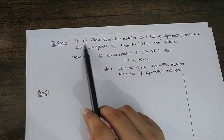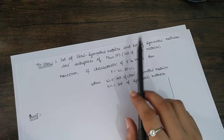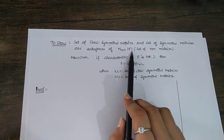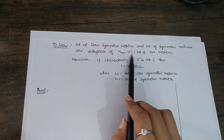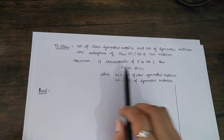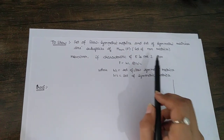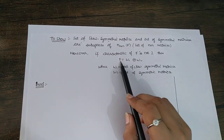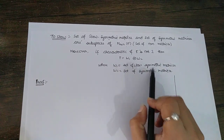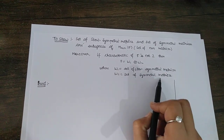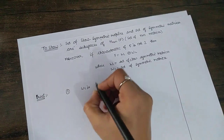We will be proving that the set of skew-symmetric matrices (W1) and the set of symmetric matrices (W2) are subspaces of M_{n×n}(F), the set of all n×n matrices with entries from F. Moreover, we will also prove that if F is a field whose characteristic is not 2, then M_{n×n}(F) = W1 ⊕ W2, the direct sum of W1 and W2.